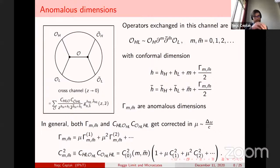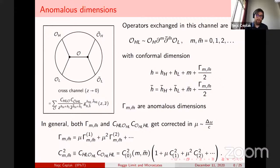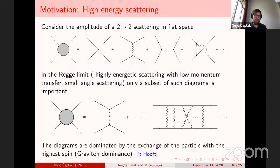If you expand order by order in μ, the corrections are heavily entangled and it's difficult to disentangle the different contributions from a specific correlator. A nice way to disentangle them is to take a specific kinematic limit in which certain operators dominate and we can obtain their contributions directly — though we lose some information along the way. This is precisely what the Regge limit does: a kinematical regime where some contributions disentangle and can be determined very nicely.